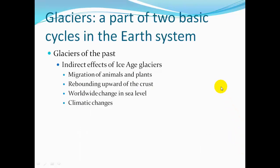Indirect effects of ice age glaciers included migration of animals and plants, rebounding upward of the crust — while the ice was on the surface it pushed down the crust due to its great weight, and as the ice melted the crust rebounded, causing uplift of rock. There was also a worldwide change in sea level: more glacial ice means more water locked in ice, so sea level is lower. As the ice melts, sea level rises. And there are climate changes from all that ice in the system.